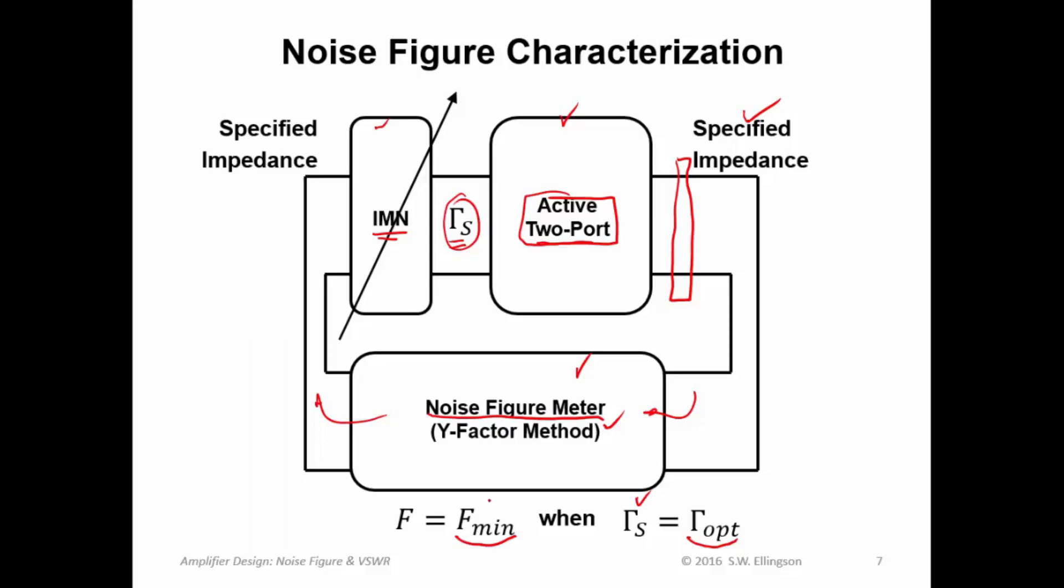So said differently, the way I'm going to characterize this transistor is to vary the input matching network, thereby varying gamma sub S. I'm going to figure out which value of gamma S minimizes the noise figure. At that point, I know that noise figure, the minimum one, is F sub min. And I achieve it at a source reflection coefficient of gamma sub opt. Now that's only for one state. In other words, I know one condition. I know that gamma sub opt yields the minimum noise figure, and I know those two numbers.